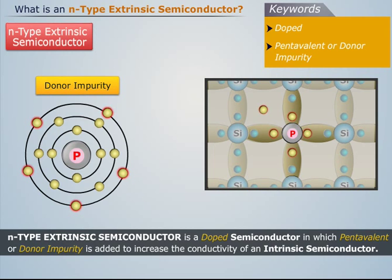Phosphorus atom has five valence electrons, out of which four electrons form a covalent bond with the four silicon atoms. But the fifth electron has no chance of forming a covalent bond, so it is loosely bound to the parent atom, which is phosphorus.